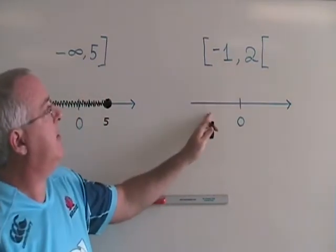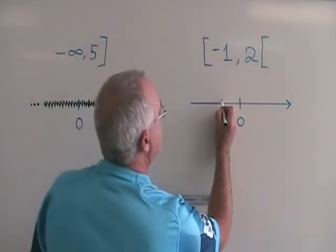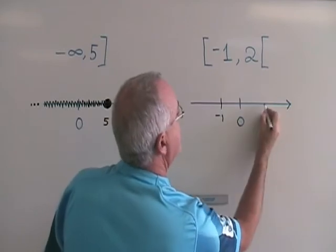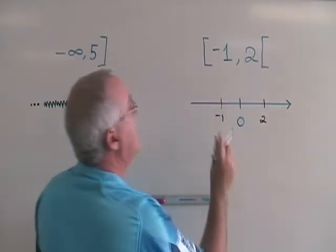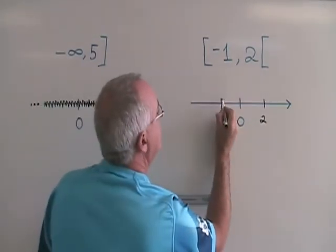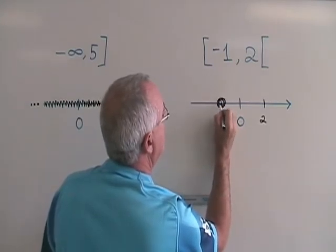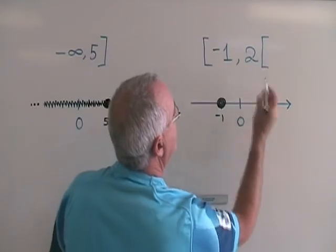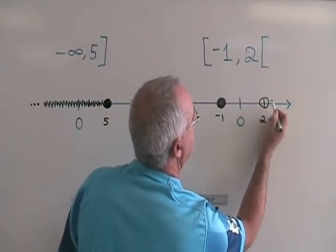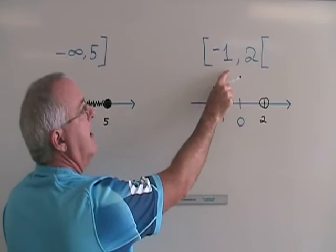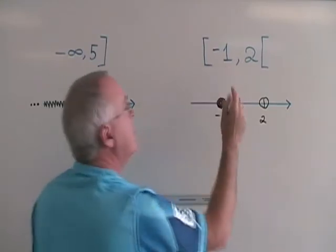Here we have two limits, the negative 1 and the 2, so I show where the negative 1 is and I show where 2 is. The negative 1 is included, so it needs a solid circle. And the 2 is not included, so it needs an open circle. I have to shade in between these two numbers.